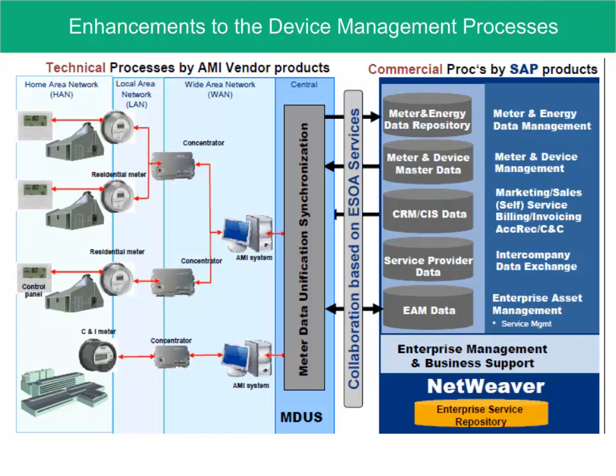To understand the background of the project, one must consider the overall design of the AMI solution. It is represented in this diagram by two major sections: commercial and technical. The commercial portion contains the SAP ERP system and the underlying NetWeaver technology solution, and provides for the ERP and ISU processes as well as the services to execute the AMI processes.